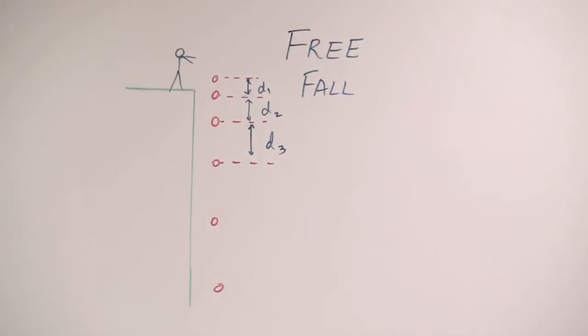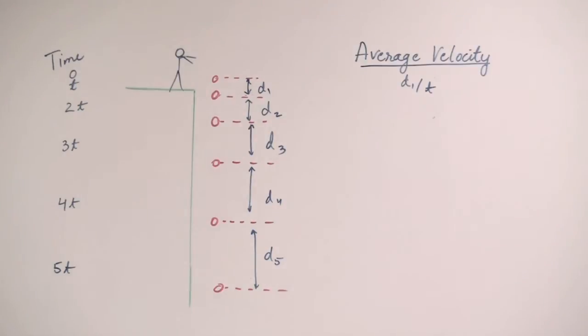Let's take the case of an object falling from the top of a building. As the object falls, it gains speed due to gravity and covers more distance in the same time interval.